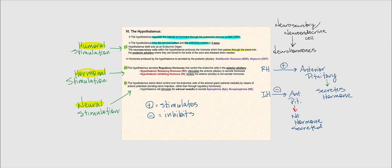The first way is through humoral stimulation, which involves the hypothalamus acting as an endocrine gland. We have what are called neurosecretory cells, also called neuroendocrine cells, that are neurons. The naming structures of a neuron apply to these neurosecretory or neuroendocrine cells, except rather than secreting neurotransmitters, they secrete hormones referred to as neurohormones.